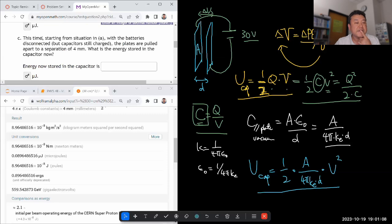In C, this time, starting from situation in A, with the battery is disconnected. Okay, so now I can just keep using this formula. So what's the quickest way to do it?